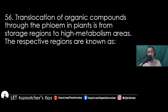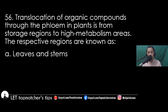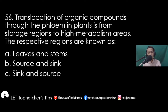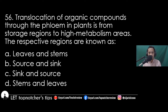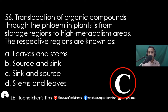Item 56: Translocation of organic compounds through flowing plants is from storage regions to high metabolism areas. The respective regions are known as A) leaves and stems, B) source and sink, C) sink and source, D) stems and leaves. The best answer is letter C, sink and source.